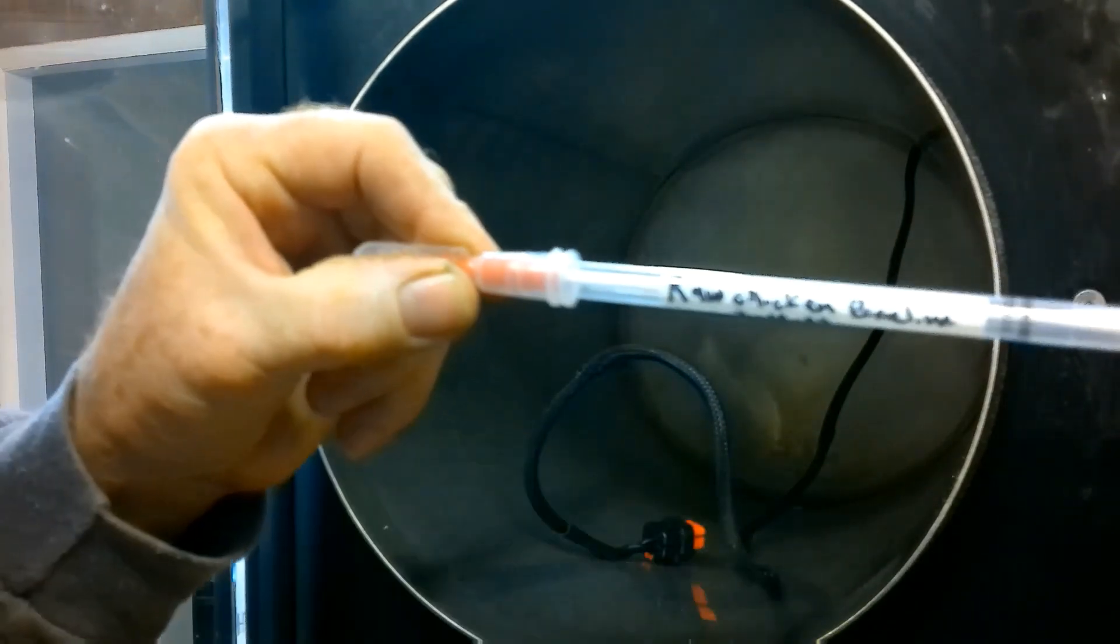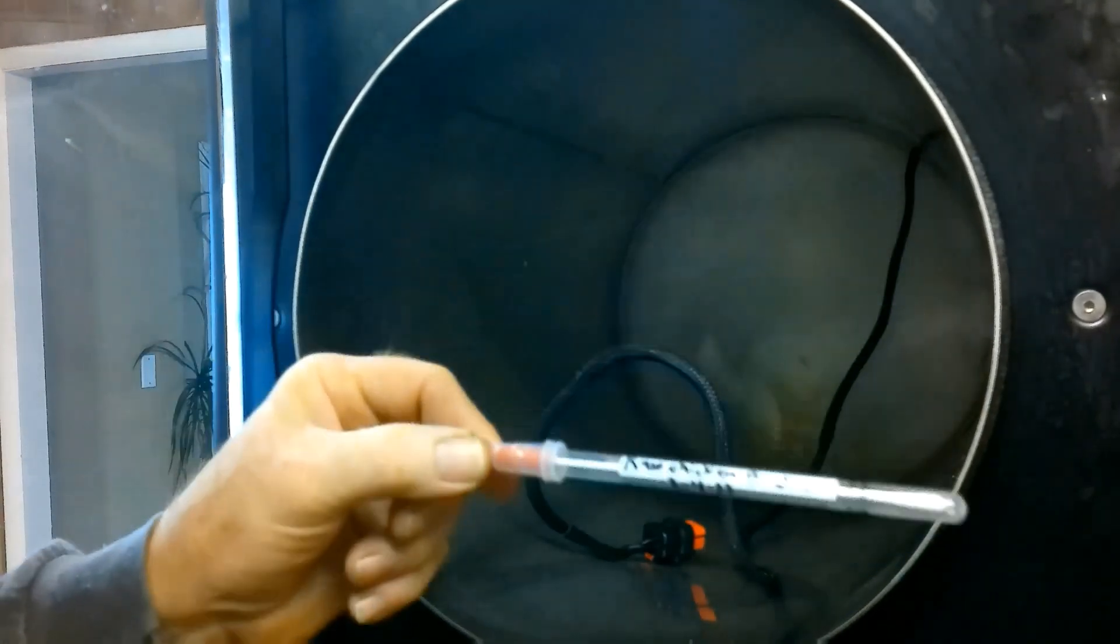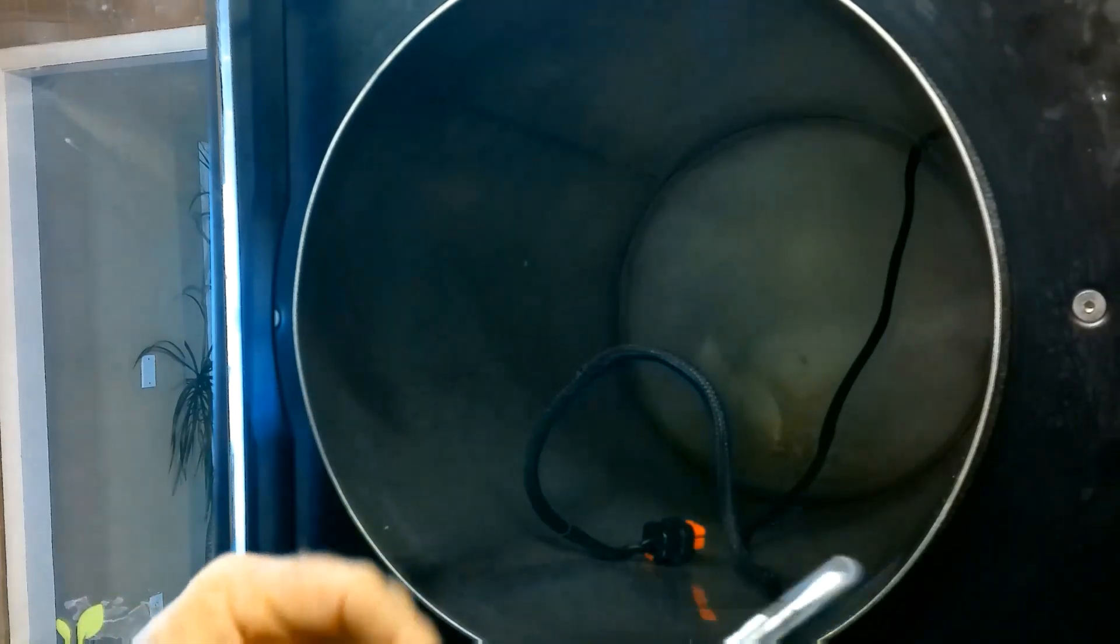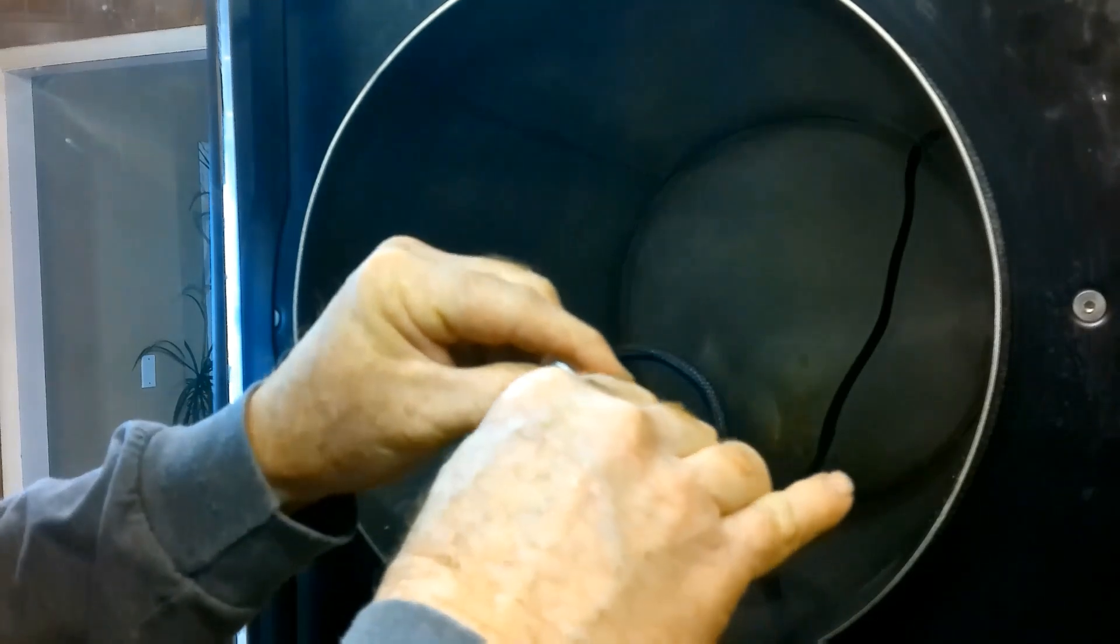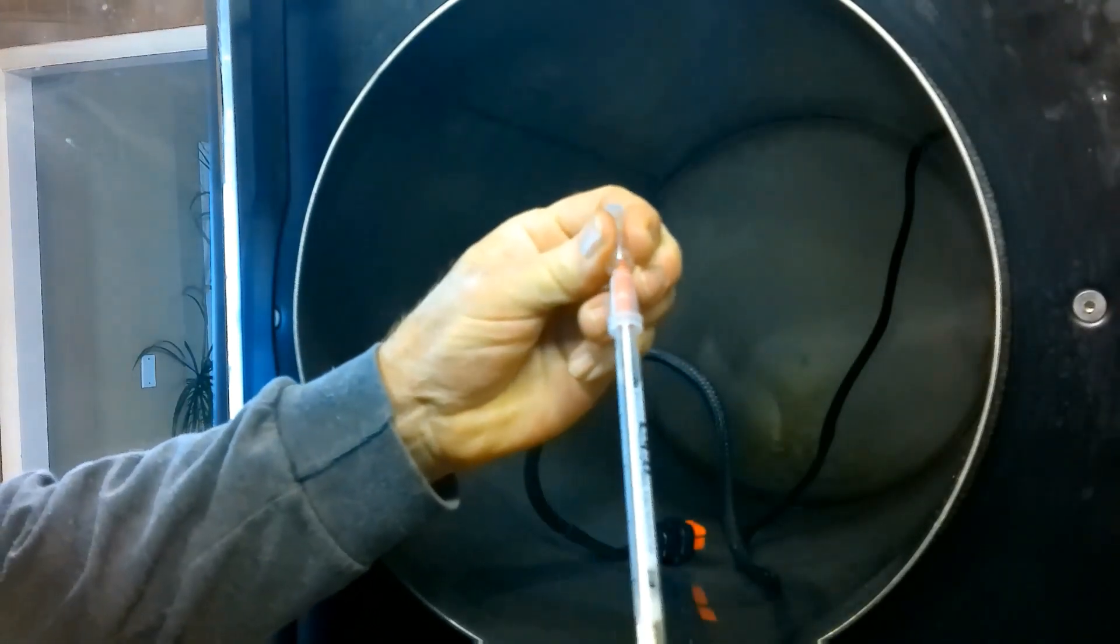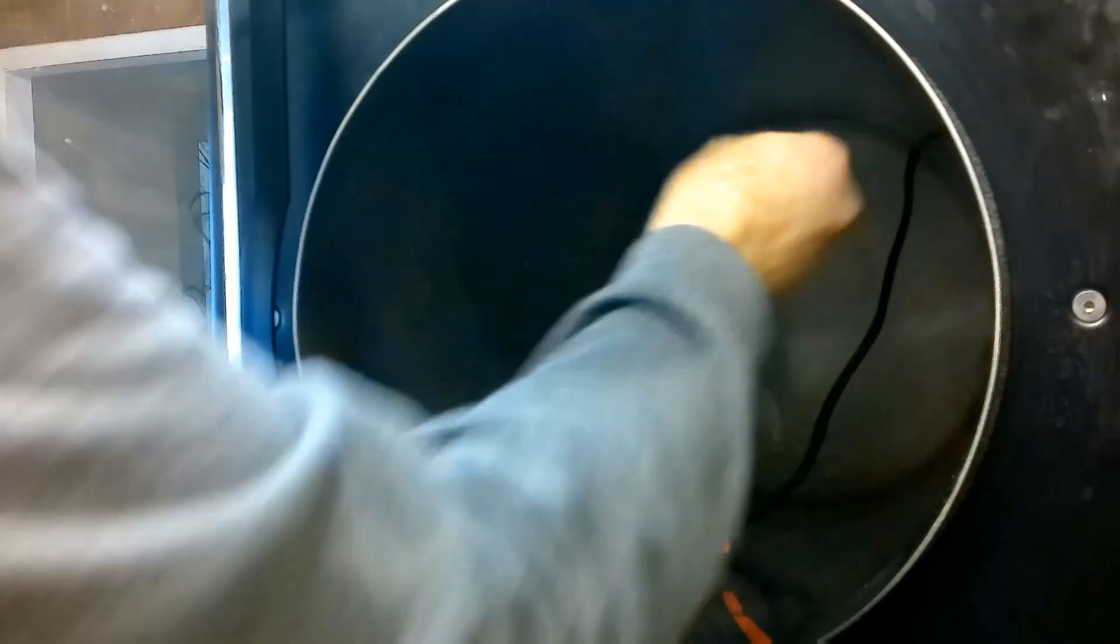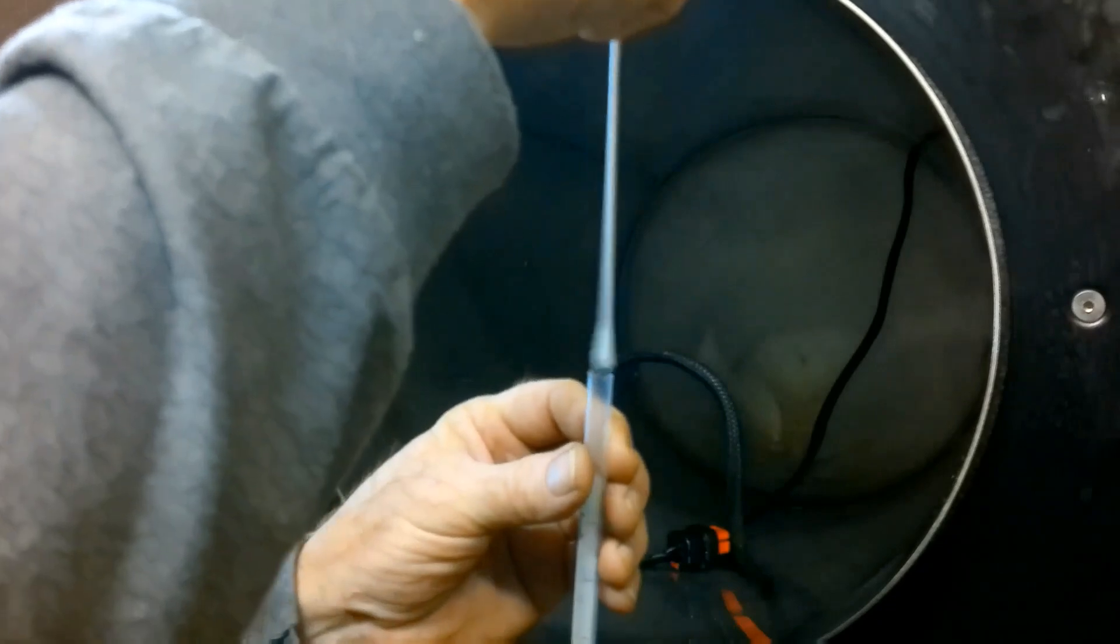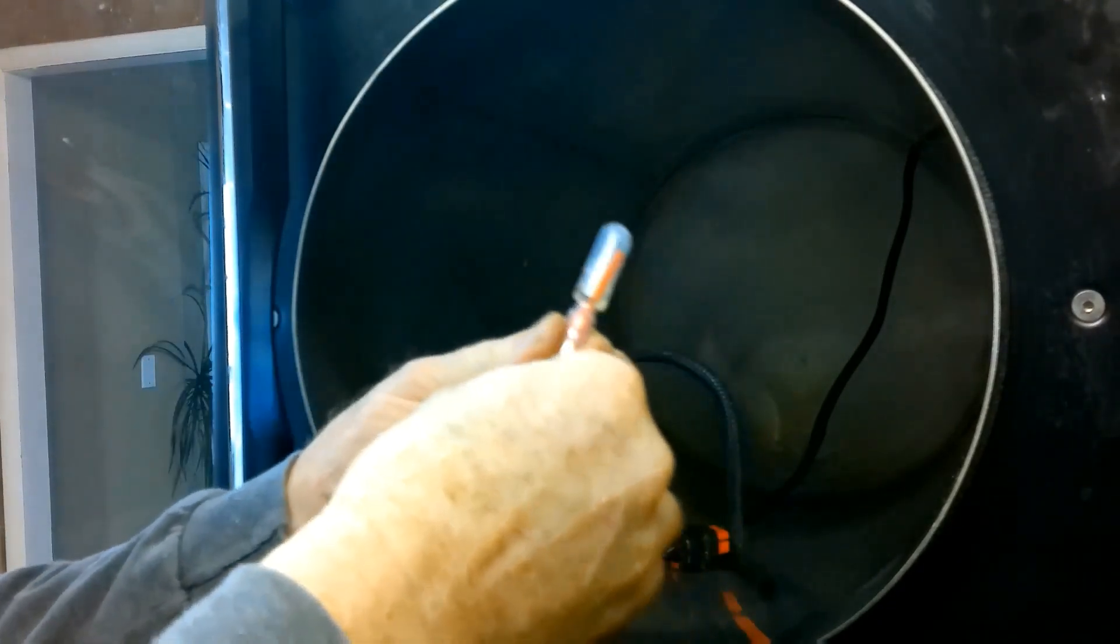The next cross-contamination event we're going to do is with raw chicken. So the first one was with raw eggs we're now going to do raw chicken and see if there's any cross-contamination. So we're going to go ahead and break the seal on this and squeeze the medium down into the tube. And that goes back in and this will be sent to the lab.